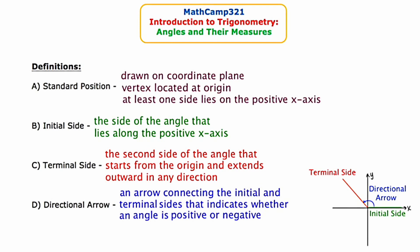The first term is standard position. An angle is said to be in standard position if it is drawn on the coordinate plane, its vertex is located at the origin, and at least one side lies on the positive x-axis. In the bottom right of the slide there is a diagram of an angle drawn in standard position — feel free to reference this diagram at any time.